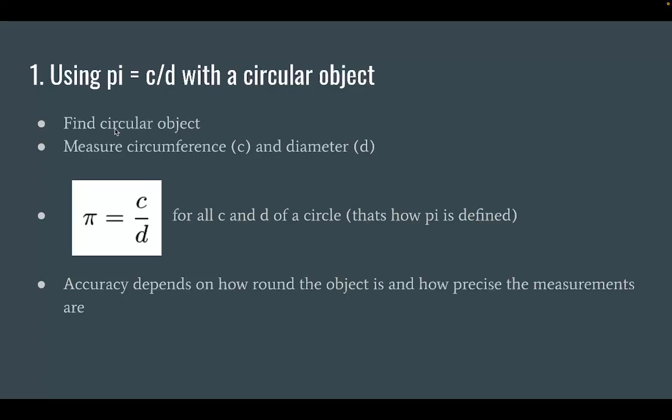So first you find a circular object. This could be like a ball or a water bottle or a toilet paper roll or something, or even a pencil if you have a precise enough measurement. But all you need is something that's circular. And when you measure the circumference, you measure the diameter, and then you just divide them.